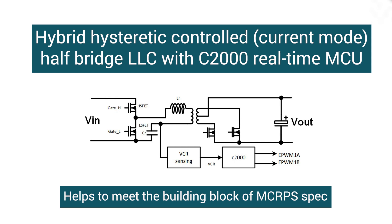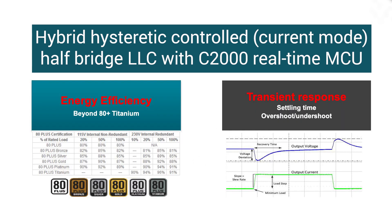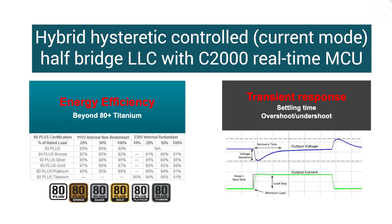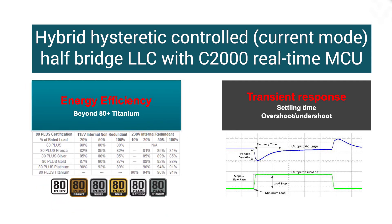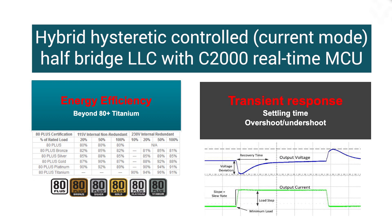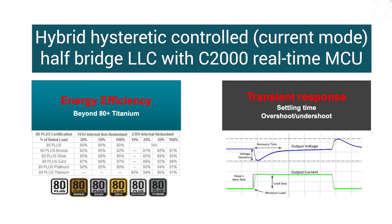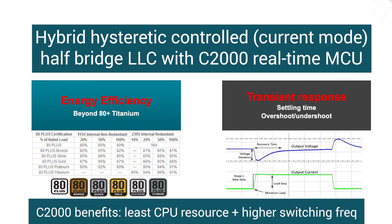It also helps to meet the building block of MCRPS spec. Among different DC-DC topologies, the LLC is chosen for higher efficiency. Compared with traditional voltage mode control, hybrid hysteretic control demonstrates higher control loop bandwidth and better transient response. The C2000 MCU helps to implement hybrid hysteretic control with the least CPU resource and achieve higher switching frequency.